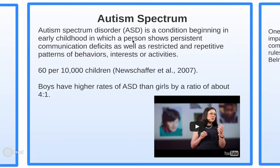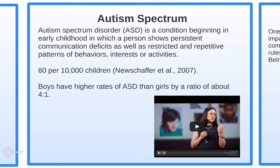Autism spectrum disorder shows persistent communication deficits as well as restrictive and repetitive patterns of behavior, interests, or activities. It occurs in about 6 out of every 1,000 children; boys have higher rates than girls at a ratio of four to one. One important point from research: ASD is related to the older age of the male parent, and it is not caused by immunizations — vaccines do not cause ASD.